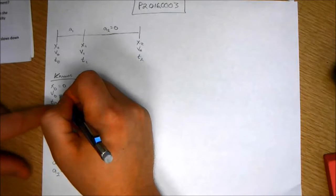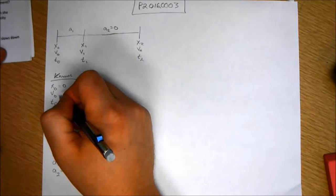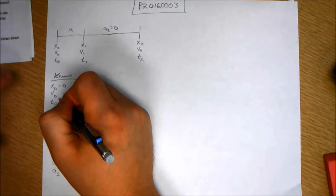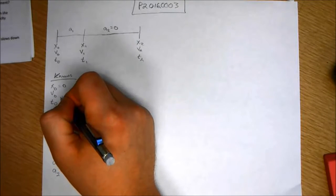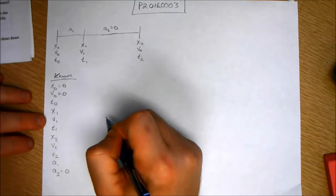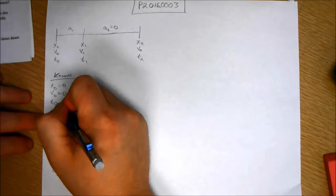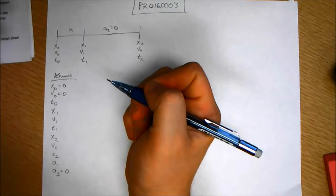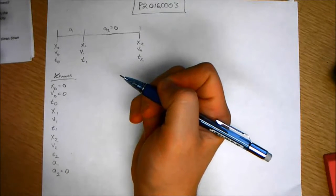The velocity, we have to look at the context of the problem, and since the problem says that she explodes out of her starting blocks, she's starting from rest. So initially the velocity equals zero. Time, let's just define the zero point as the beginning of the sprint.